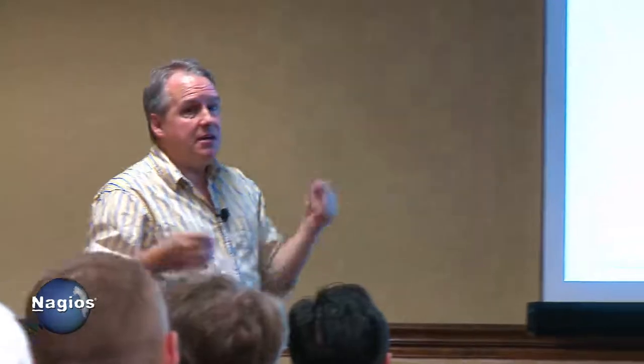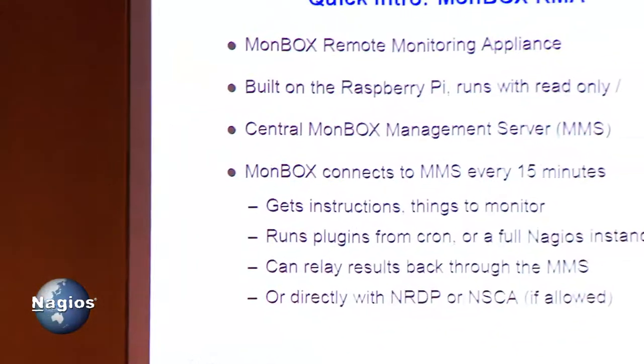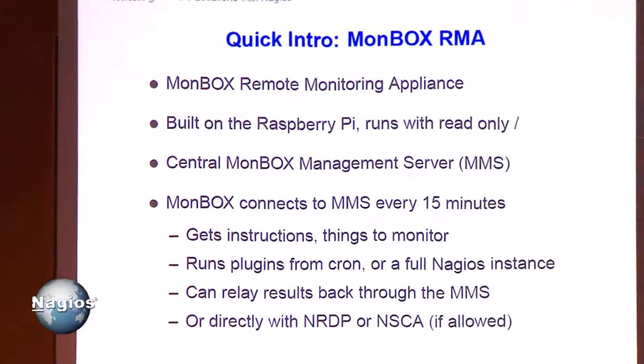I stole the reflector idea from Ethan and Scott. I set up a management server that knows about all the different Raspberry Pis. The Raspberry Pi — you plug it in, it's got a flash card loaded with my software on it, it connects to the management server and says, what would you like me to do? Downloads cron jobs or Nagios configuration fragments and runs those. Then it either reports back directly to a Nagios server if it can, or uses a reflector-like service to send results back that way.